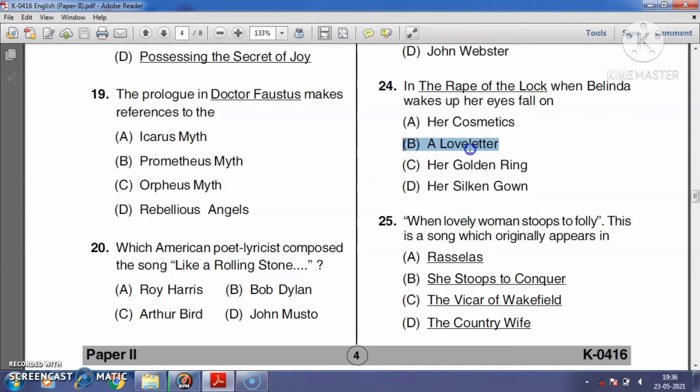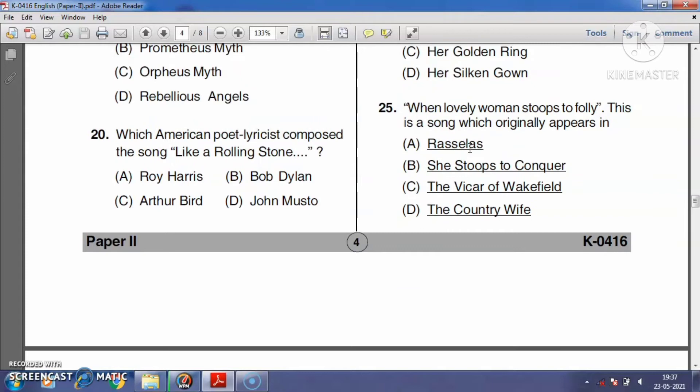Question number twenty-five: 'When Lovely Woman Stoops to Folly' is a song which originally appears in She Stoops to Conquer, The Vicar of Wakefield, or The Country Wife? The right answer is The Vicar of Wakefield, a novel by Oliver Goldsmith. Option B is the right answer.